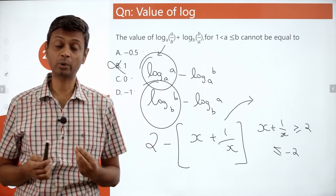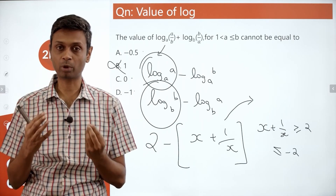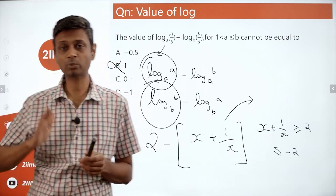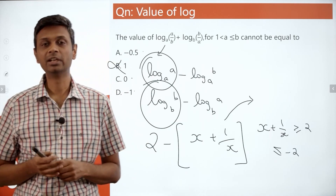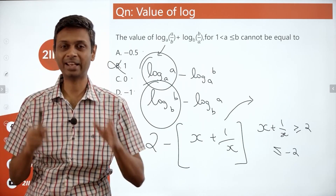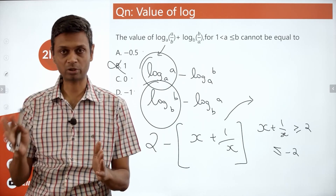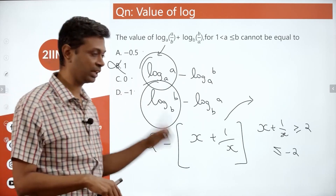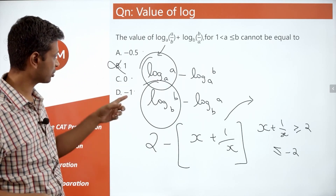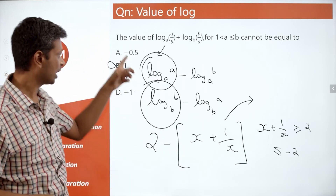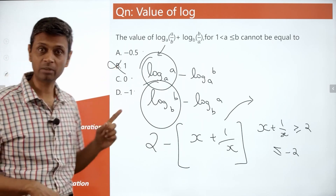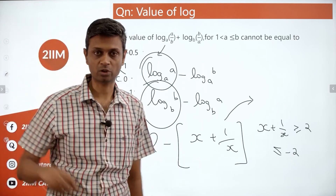One aspect here is that logarithm properties are being manipulated a little bit. The second idea here is very powerful: x plus 1 by x is either greater than or equal to 2 or less than or equal to minus 2. It cannot sit between minus 2 and plus 2. So the expression can never be equal to 1, because that would mean x plus 1 by x has to be 1 — and that's not possible.